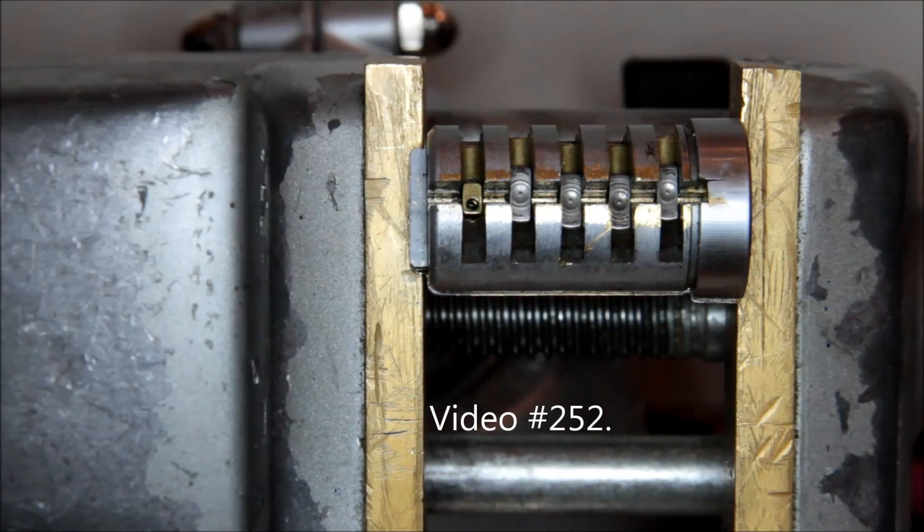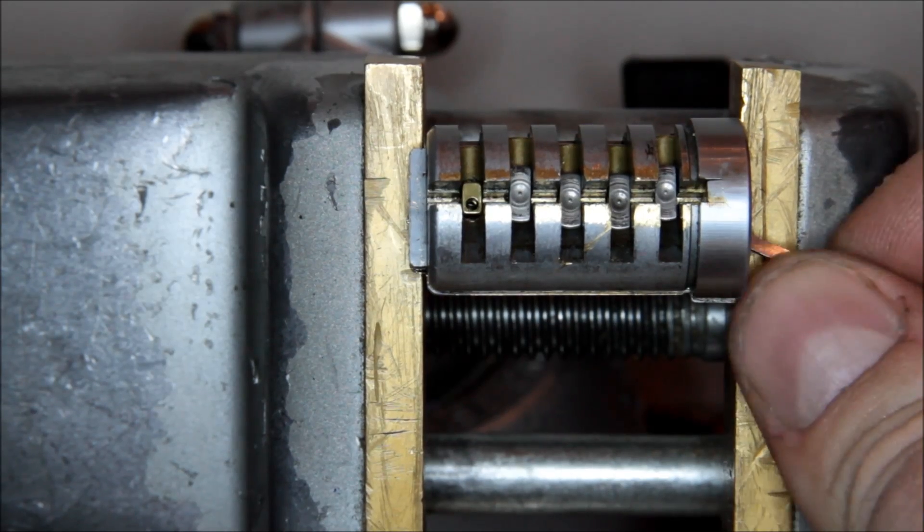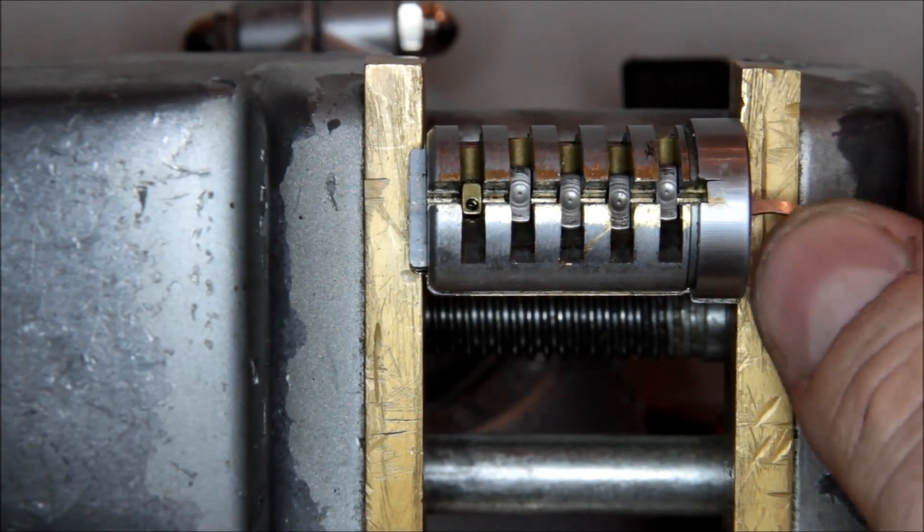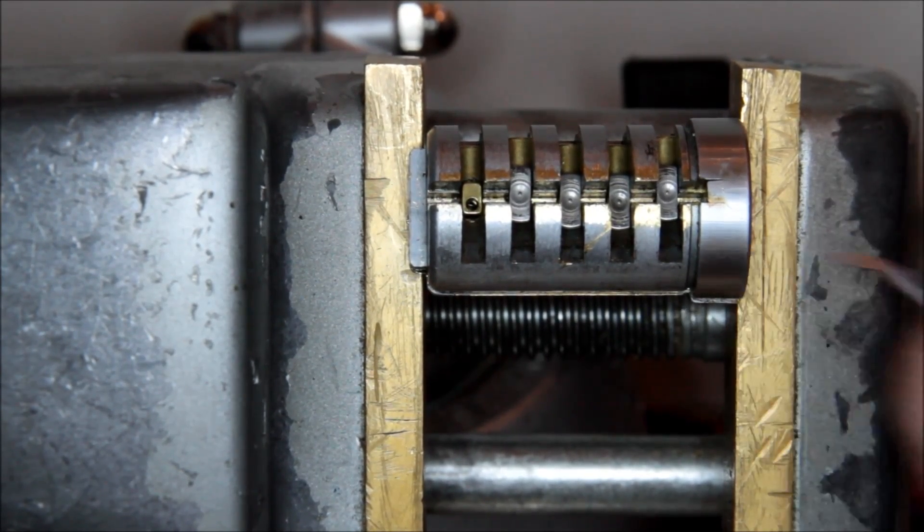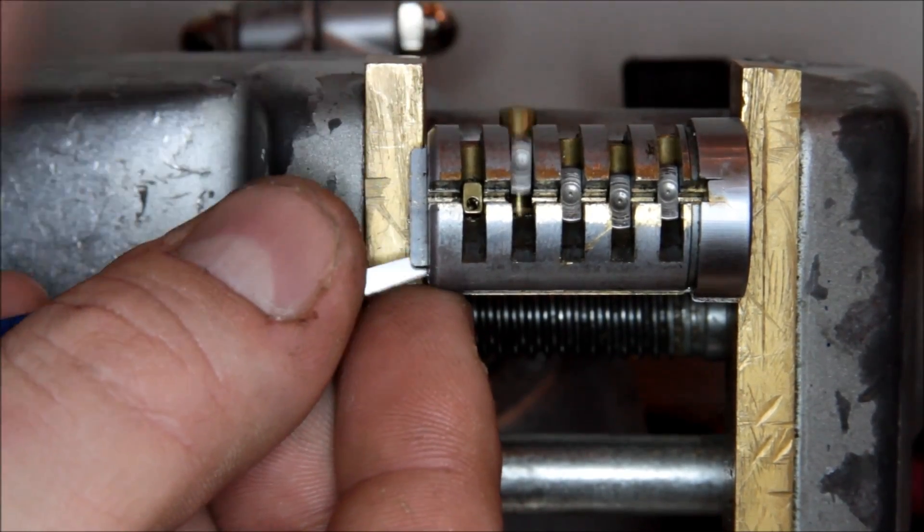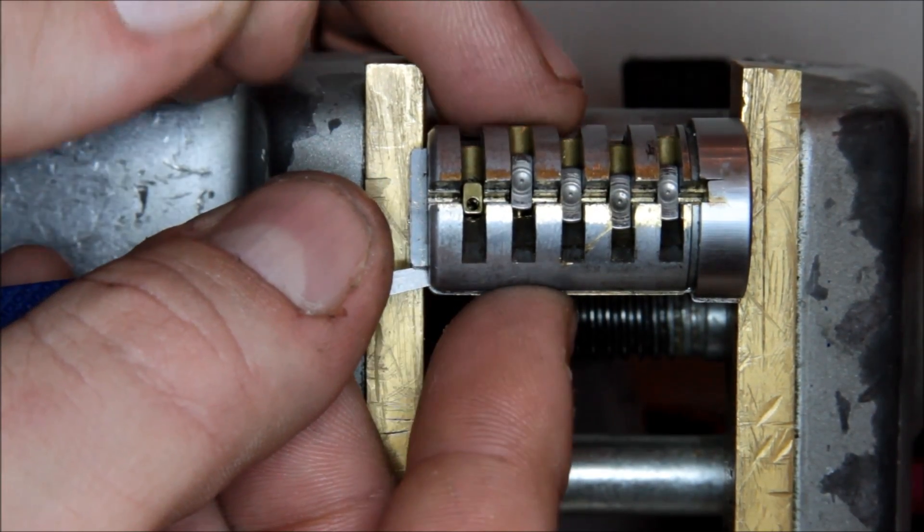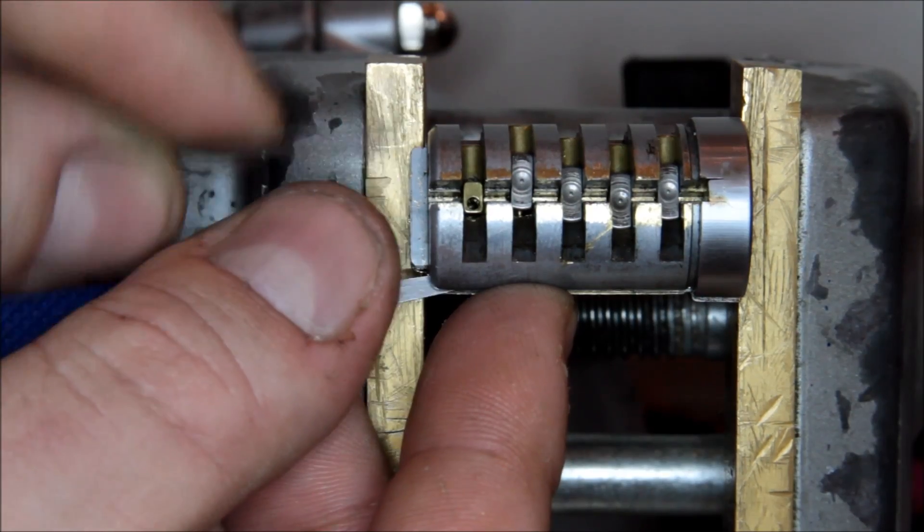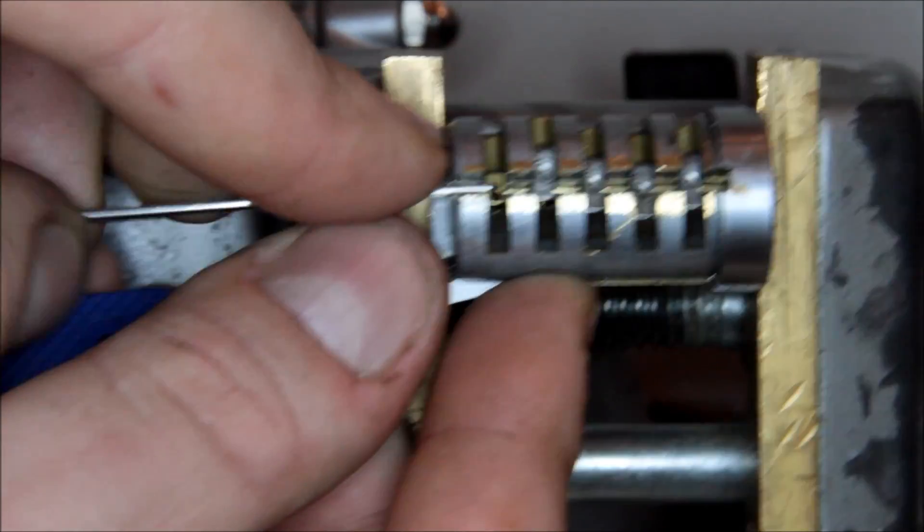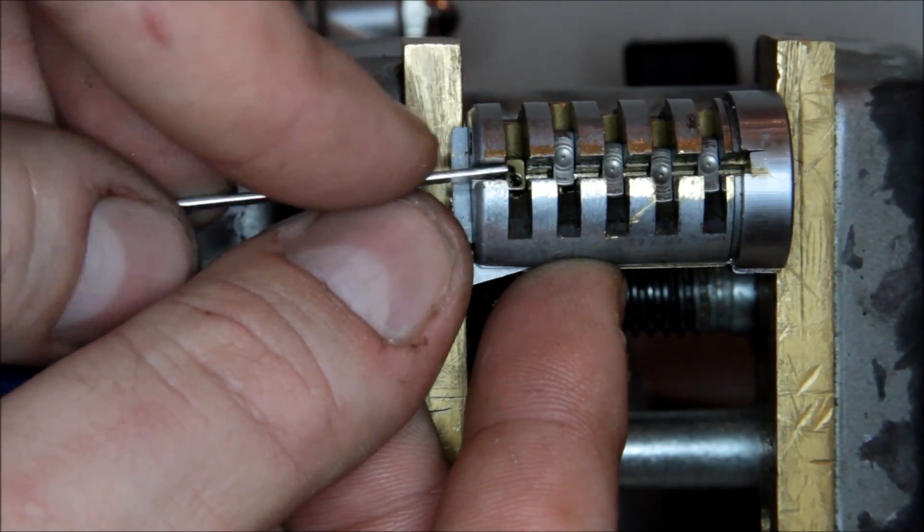So the way that this would work is that if the proper key were inserted and we rotated the lock to 90 degrees as we did in the example, so for example, that pin would be at that level at shear. Okay, and what would happen is that when I insert this tool, it comes in, it has like a little bevel on it, and it's able to reach in behind.